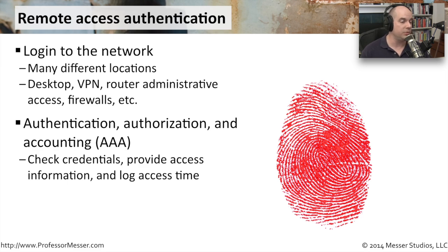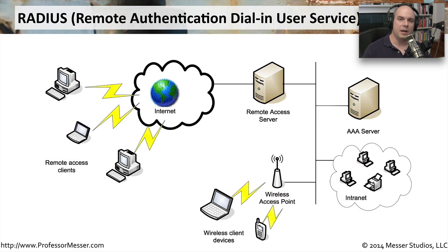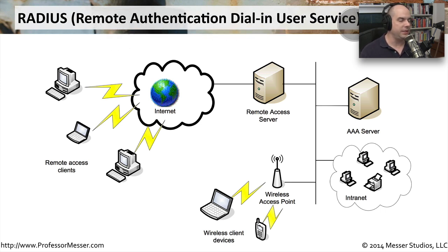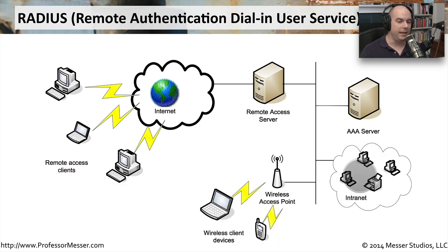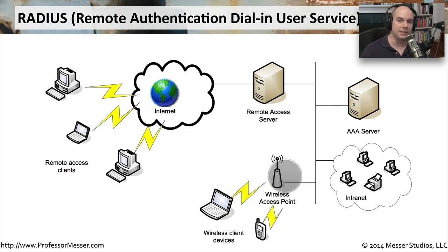AAA is a core part of remote access authentication. One very common way to authenticate to a network is through RADIUS — Remote Authentication Dial-In User Service. The first RADIUS RFC was RFC 2058, and the most current version is RFC 2865. Users logging in remotely over the internet, wireless client devices, and internal network users all use devices that already have RADIUS clients on them.